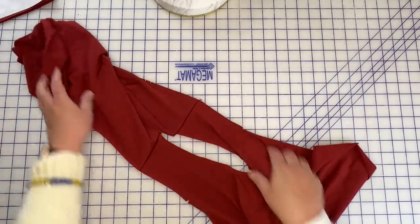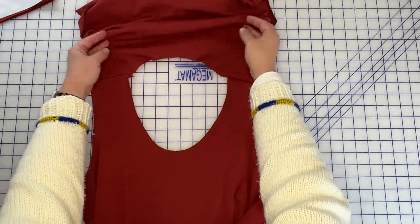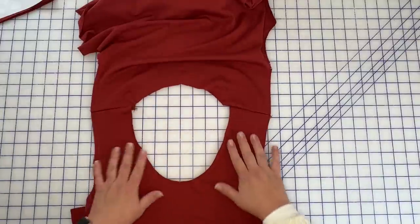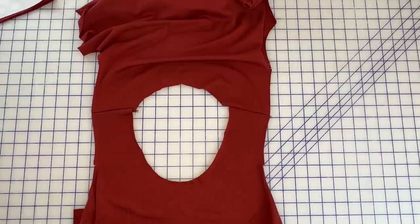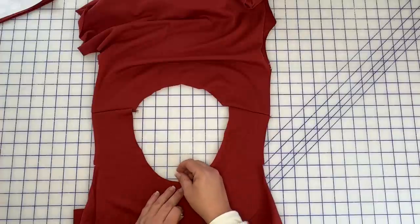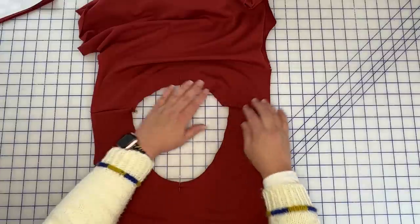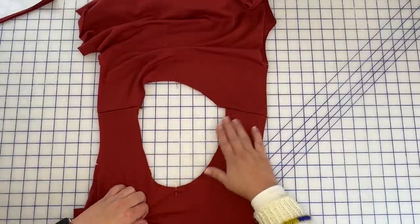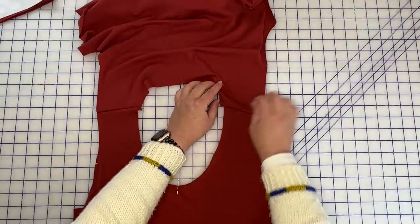So the first thing we're going to do is we're going to measure for our neck band. So what I'm going to do and that's why I've already gone ahead and sewn my shoulder seams here. And I have marked when I cut this out I marked a notch and I'll put a pin here so you can easily see where center front is and then center back.